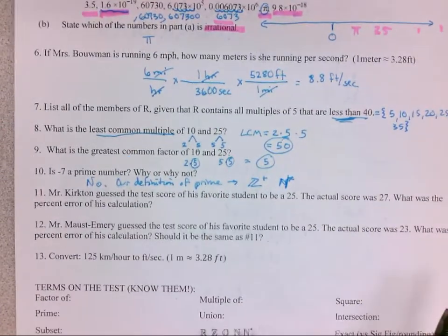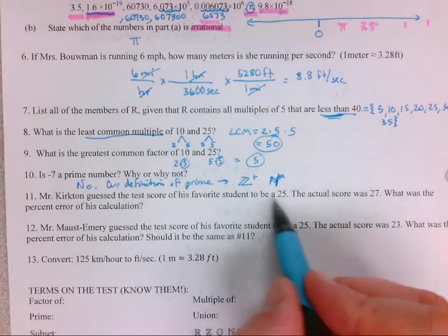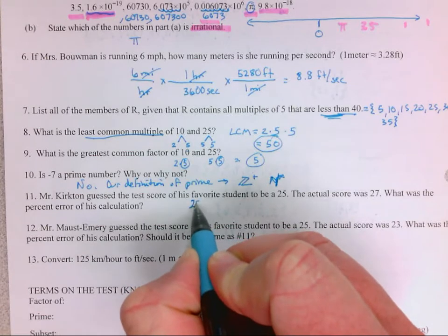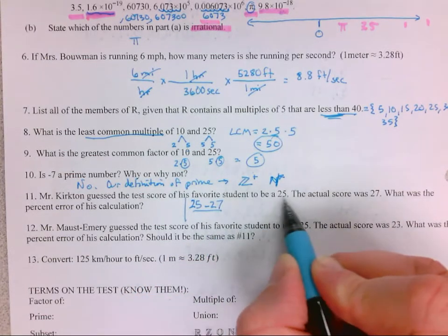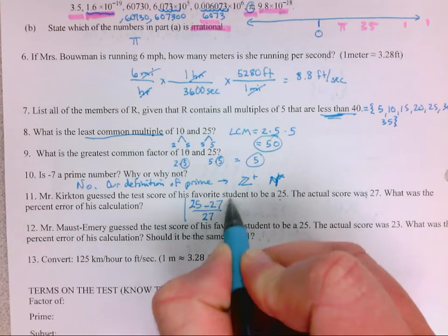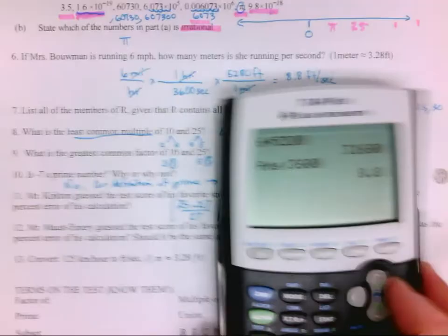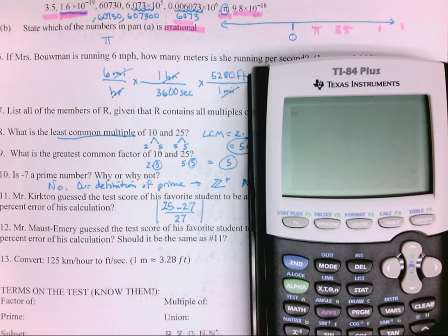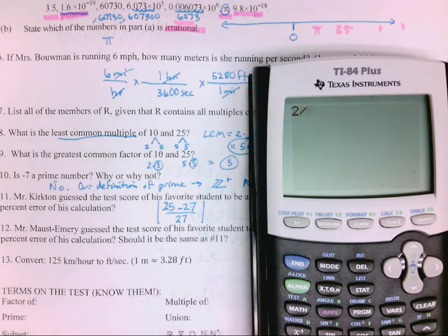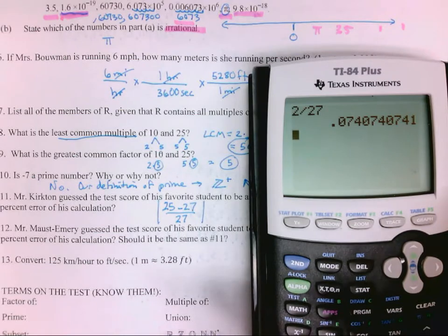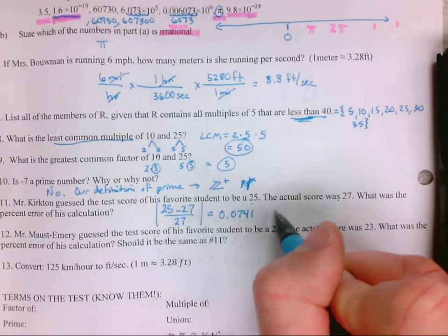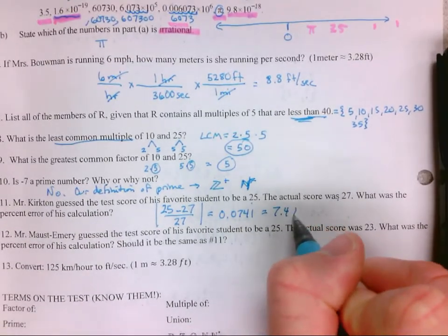Mr. Kirkton guessed the score of his favorite test student would be a 25. The actual score was 27. What was the percent error? Percent error is the difference between the guess and the actual divided by the actual. Then change it to a percent. So it's always absolute value. So I know that 25 minus 27 is 2. 2 divided by 27 is 0.0741, which is 7.41%.